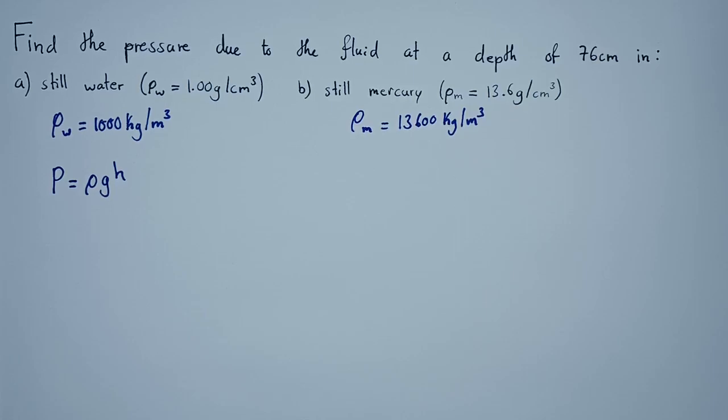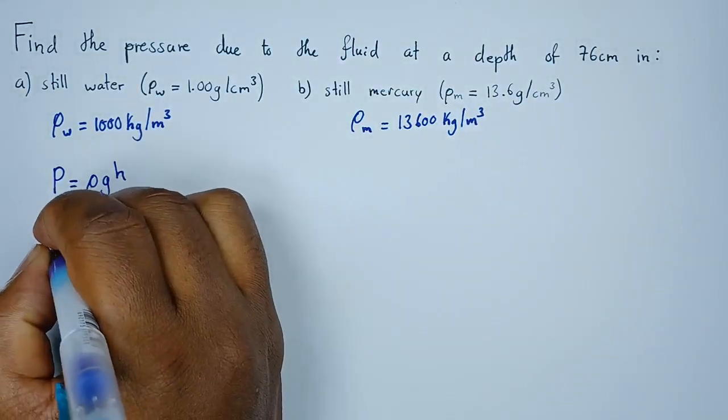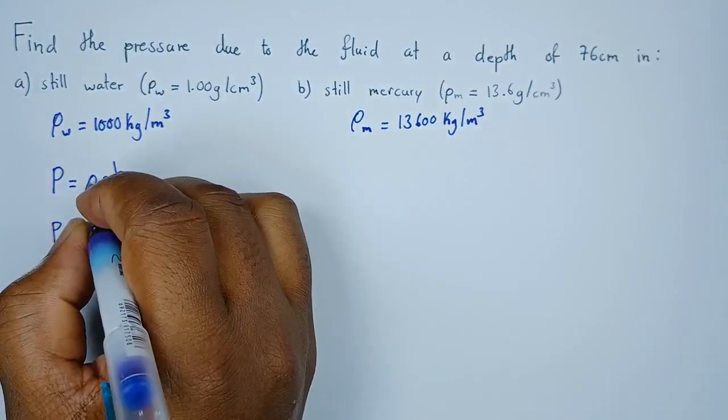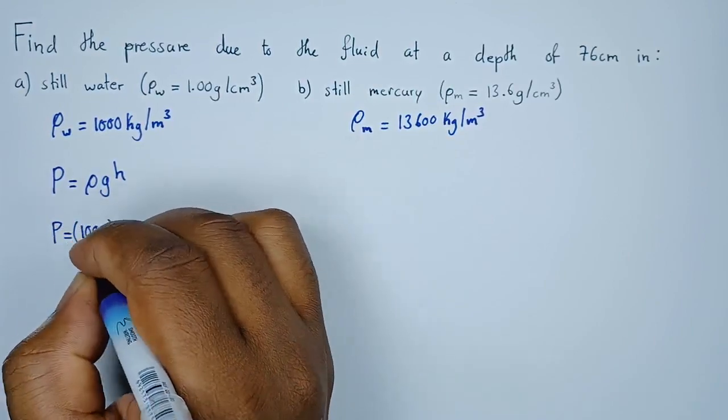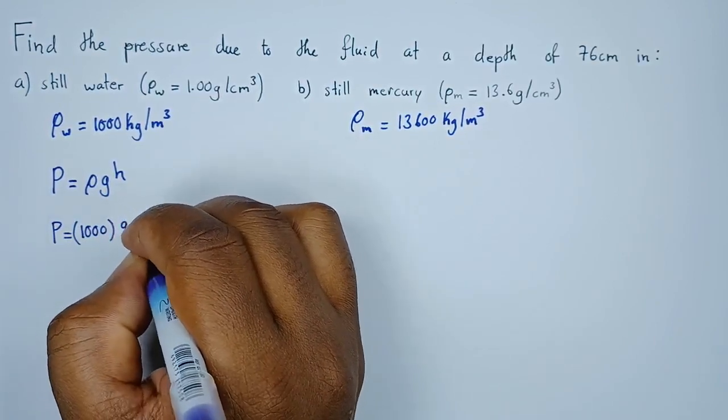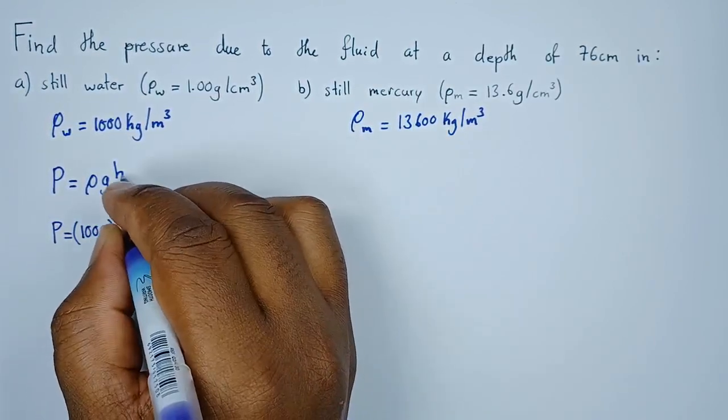For water, pressure equals the density for water given as 1000, acceleration due to gravity, let's use 9.81, and the height in meters which is 0.76.